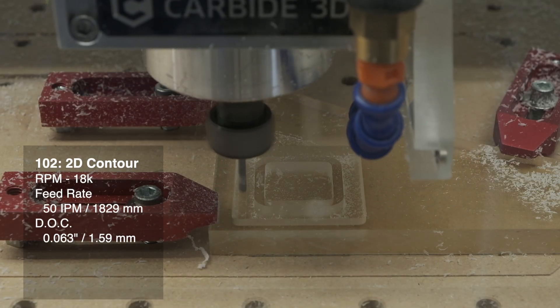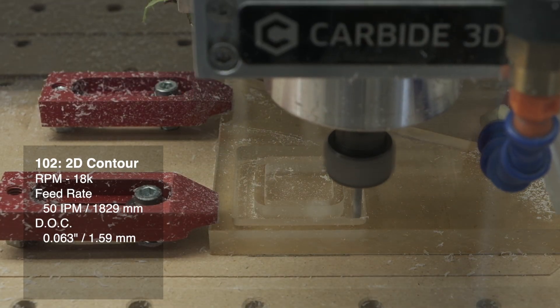For 2D contours, 18,000 RPM, 50 inches per minute, and a 0.016 inch depth of cut.